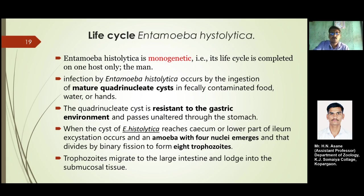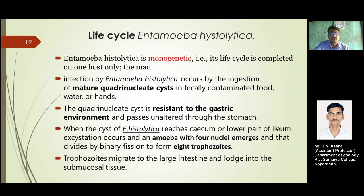The mature quadranucleated cysts present in fecal matter, or in fecally contaminated food, water, or hands, are ingested by man. The quadranucleated cyst is resistant to the gastric environment. Our gastric environment is very acidic, but the cyst has a simple protein coat on its structure, allowing it to survive in that acidic medium in the gut and pass unaltered through the stomach.